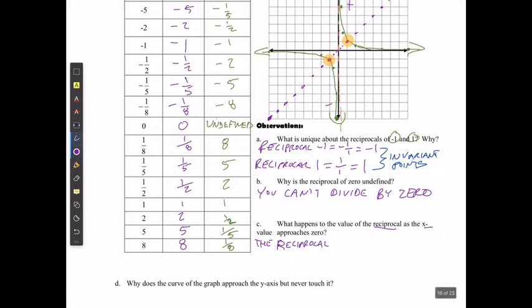What happens is the reciprocal approaches either negative infinity or positive infinity, depending on if it was on the positive side or the negative side.